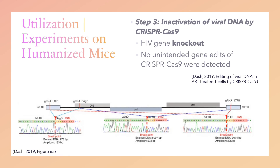Three weeks after discontinuing LASER ART therapy, researchers used CRISPR gene editing to inactivate specific portions of HIV DNA remaining in T-cell genomes of the spleen, bone marrow, lymph nodes, brain, kidneys, and other tissues. Specifically, researchers utilized a knockout approach to inactivate the integrated HIV gene. As shown in the figure, Cas9 endonucleases were engineered to target the LTR1 and GAGD target sites by producing double-stranded breaks at three locations along the HIV DNA. After directing the Cas9 endonucleases to the specific locations, the subsequent double-stranded breaks were repaired by non-homologous end-joining. Because this often results in a small insertion or deletion of a few base pairs at the break, a series of frameshift mutations result that inactivate the function of the HIV gene. With further analysis, it was also determined that no unintended gene edits of CRISPR-Cas9 were detected as a result of the frameshift mutations.